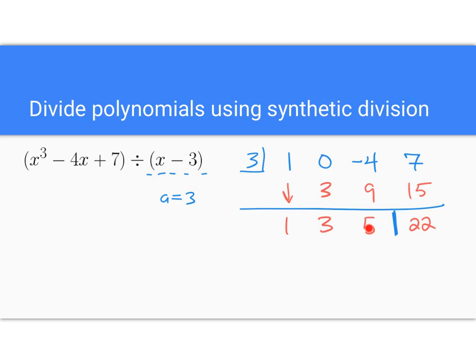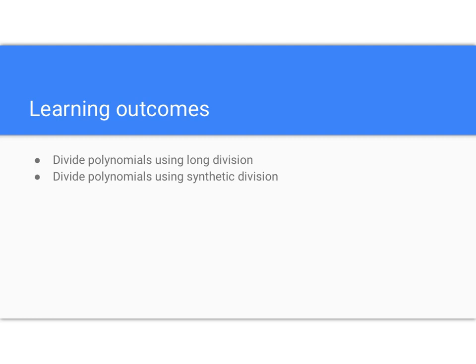And then again with synthetic at the end, this is your remainder, this will be your constant term, coefficient of x to the first, coefficient of x to the second. So 1x squared plus 3x plus 5 plus 22 over x minus 3. Again, should get the same answer if you do the same problem, just one with long division, one with synthetic.